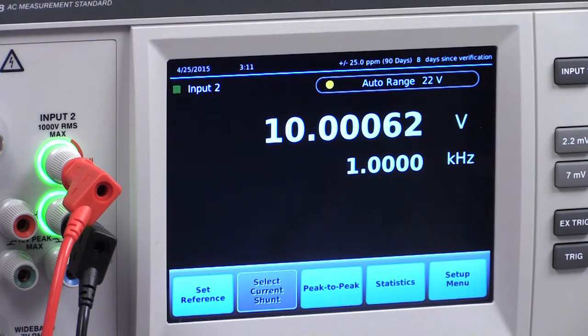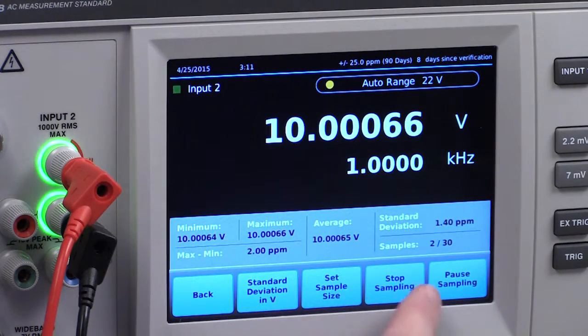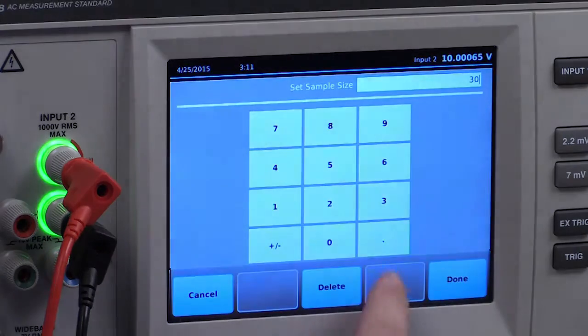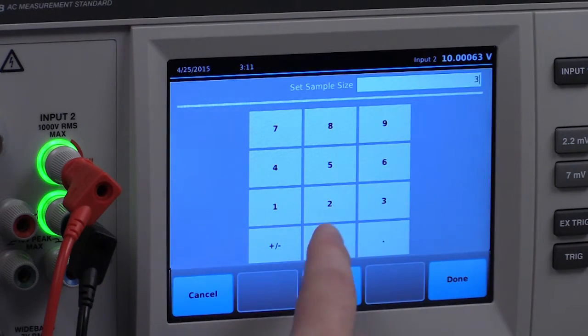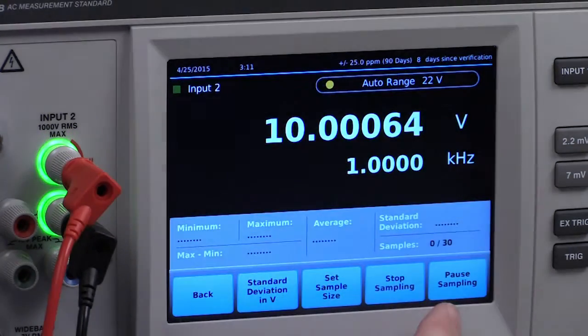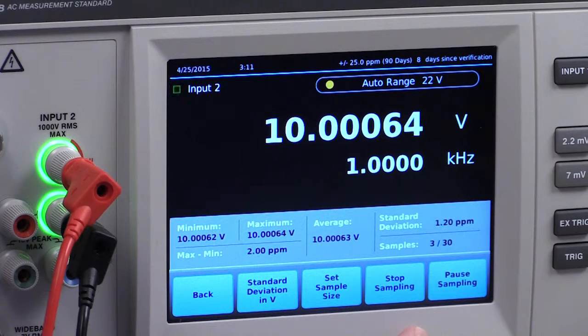The third major 5790B improvement is its new statistics function enabling you to view and control the sampling while also viewing the measurements. Statistics allow you to easily gather measurement samples over a set period of time, providing min, max, average, standard deviation and peak-to-peak data.